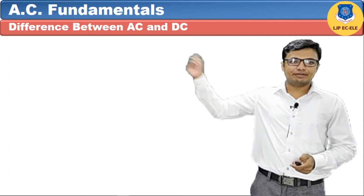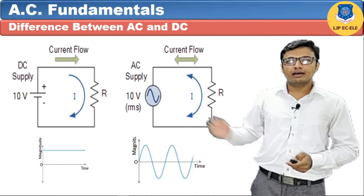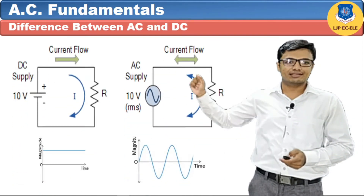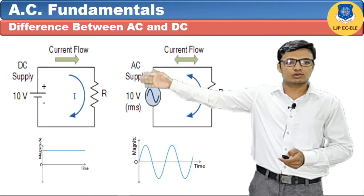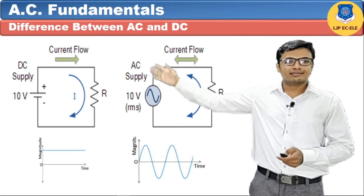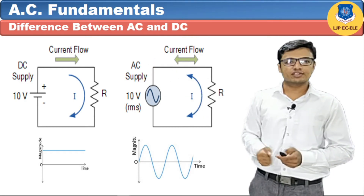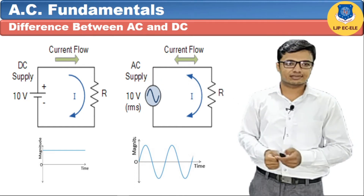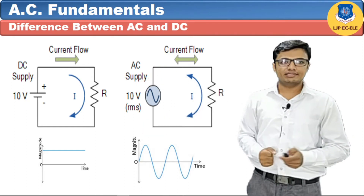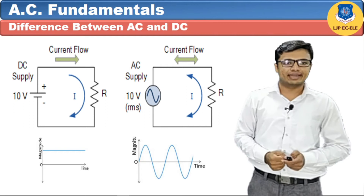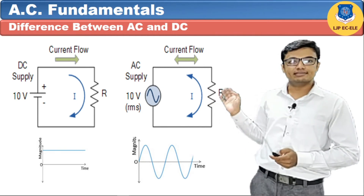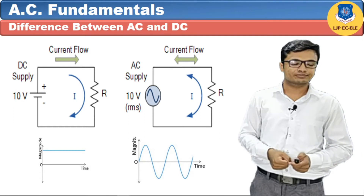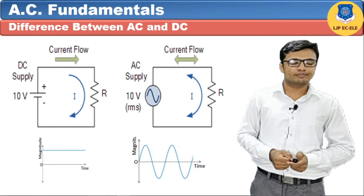Let's see the difference between AC and DC supply. Here you can see a DC source connected in series with a resistance, so current flows from source to load — this is the direction of DC current. The waveform of DC current is indicated by a straight line. With an alternating source connected in series with resistance, the waveform of alternating current is indicated by a sine wave.